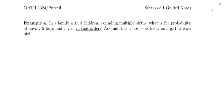Example four: in a family with three children, excluding multiple births, what is the probability of having two boys and one girl in that order? Assume that a boy is as likely as a girl at each birth.